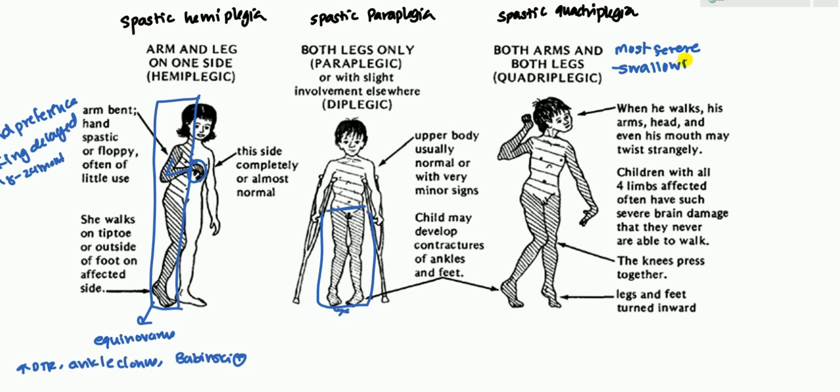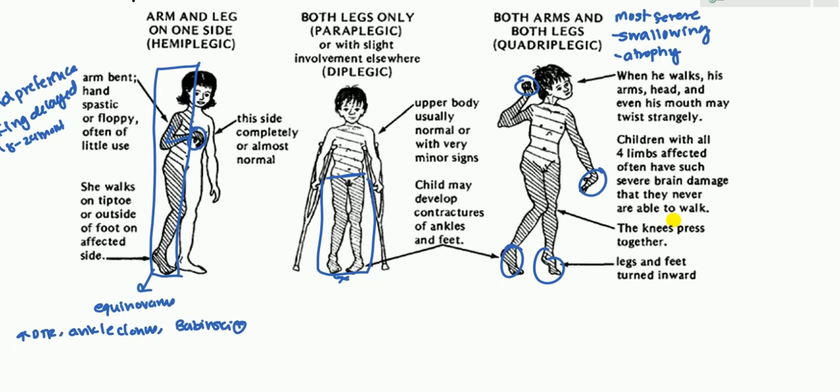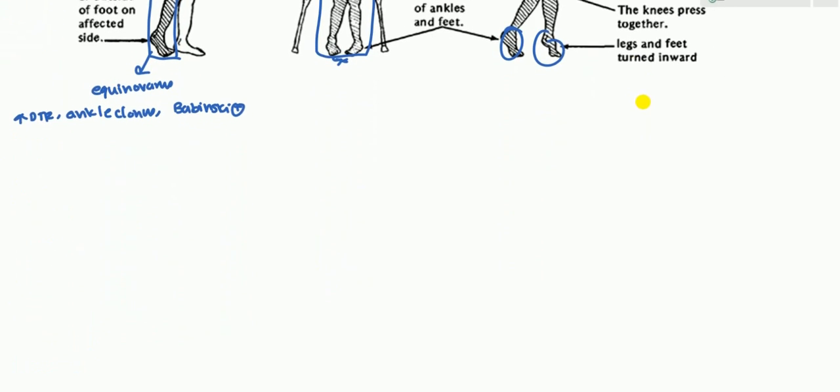Let's talk about quadriplegic. This is the most severe. It is associated with swallowing deformities, which can lead to aspiration pneumonia. You can see here that all the limbs are contracted. They usually have severe atrophy of the entire body, all the limbs and the entire body. And so they're not able to walk and they're pretty much just bedridden and they need a lot of support.